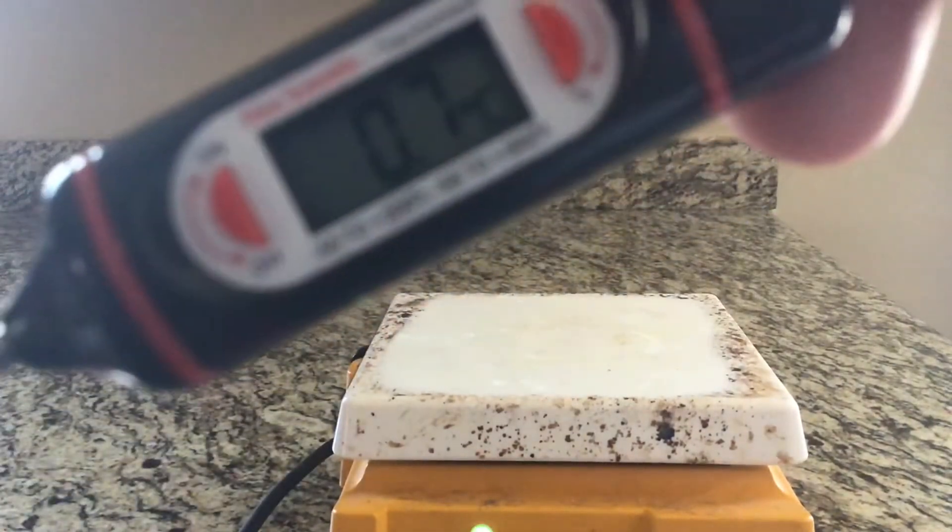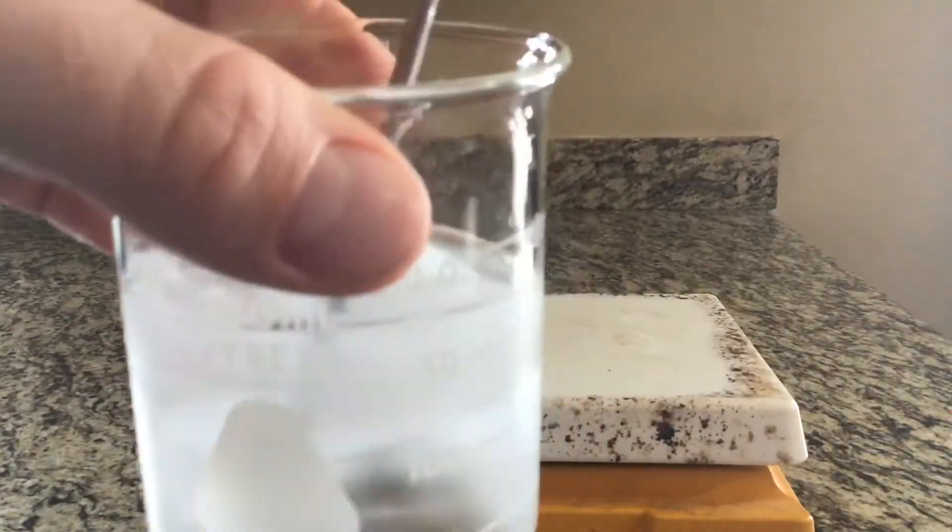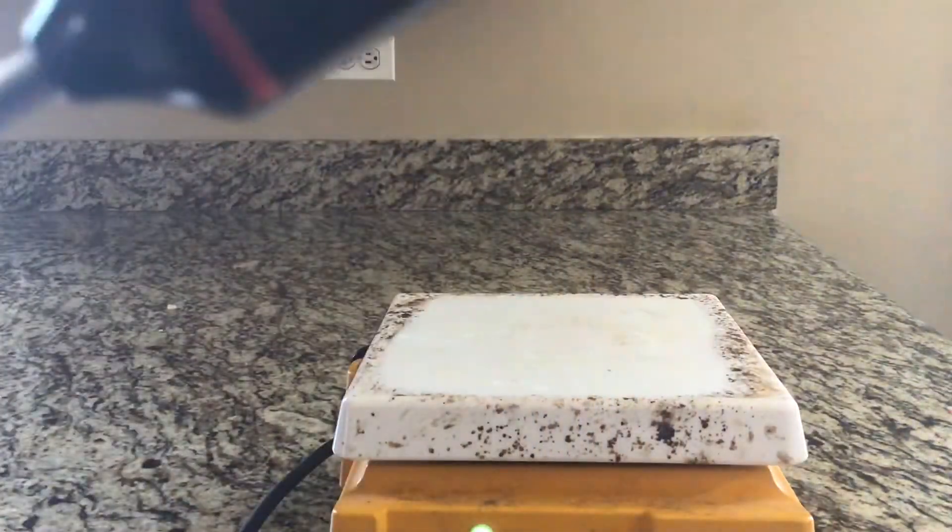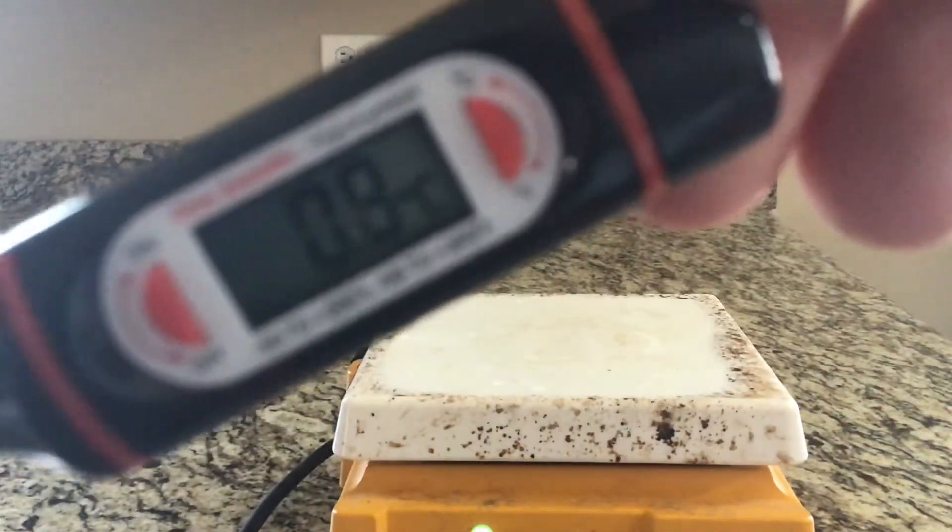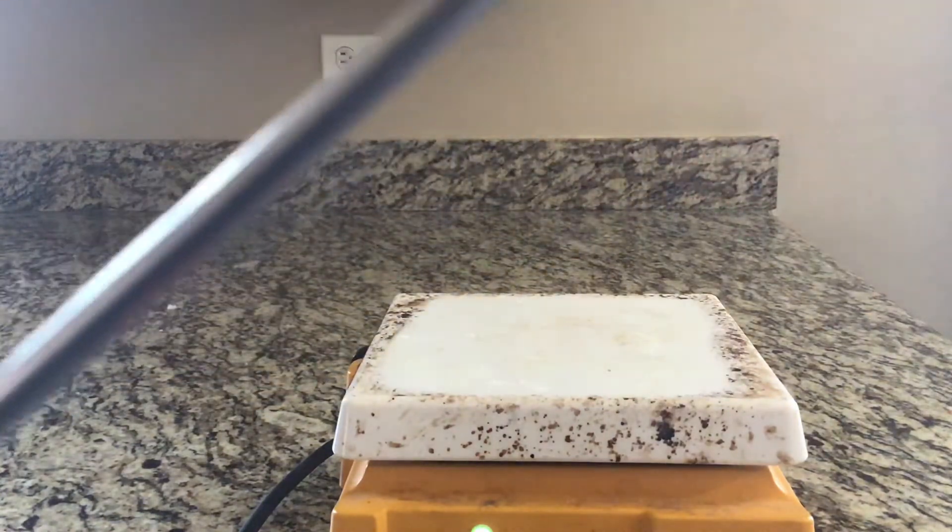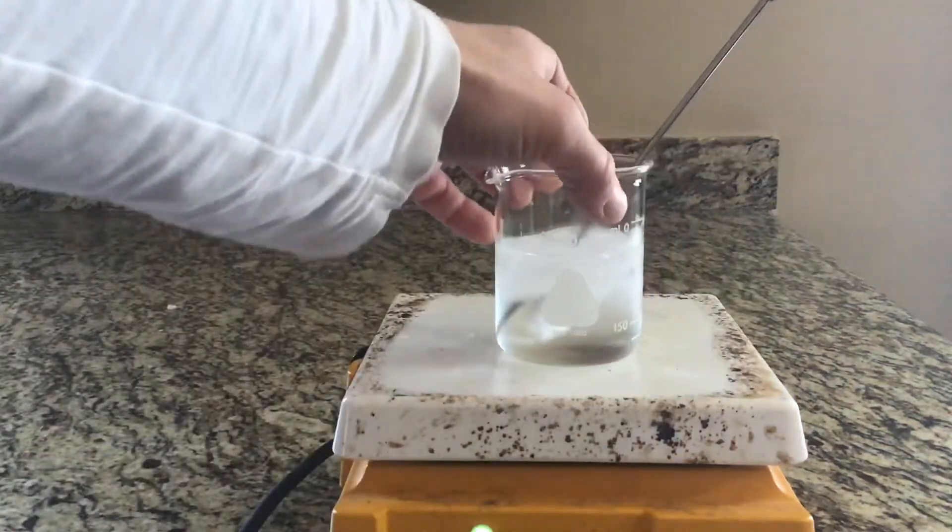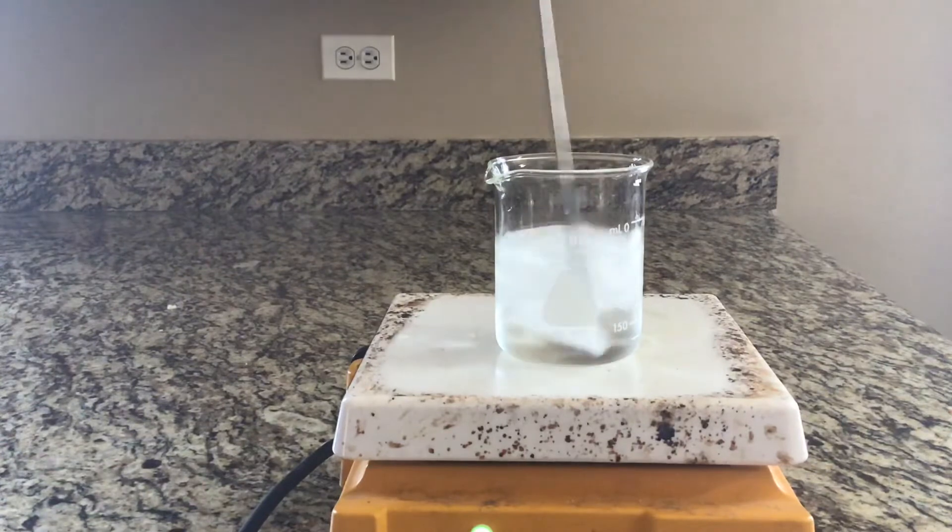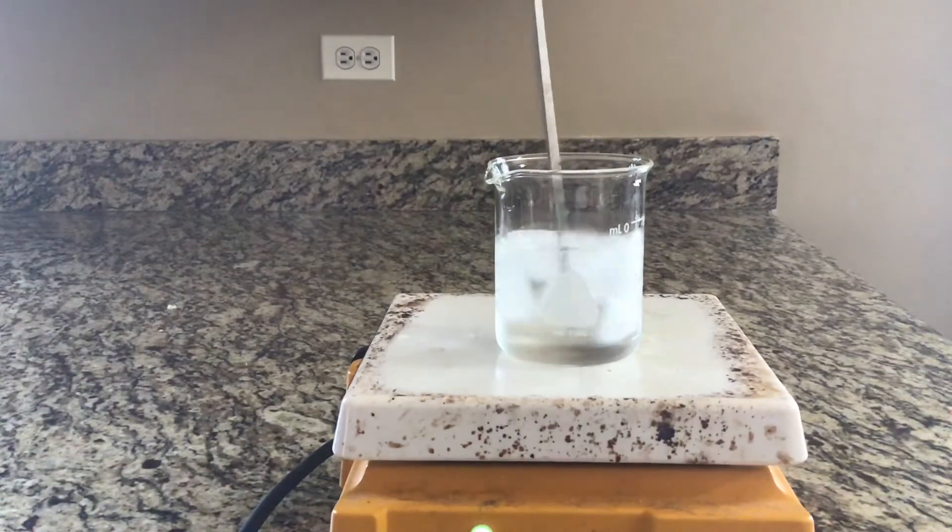Let's get our initial reading. This has been in the ice water now for a good minute or two and there's still ice and water in there. We're going to say that our starting temperature is about 0.8 degrees Celsius. I'm going to put it on here, start stirring this and heating it up, and we're going to take the temp every 20 seconds.